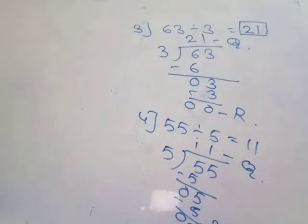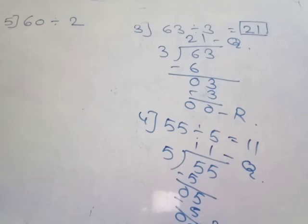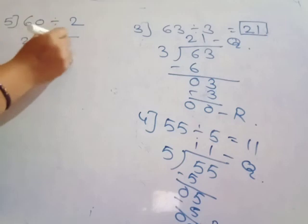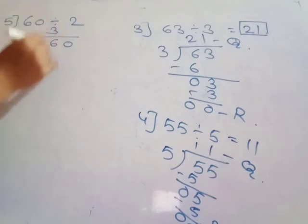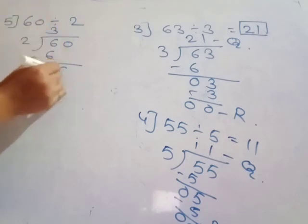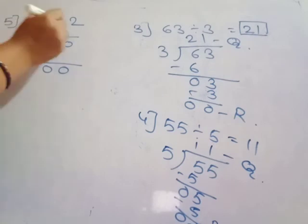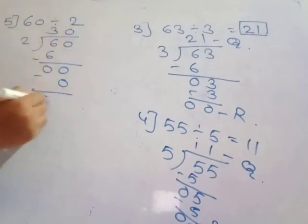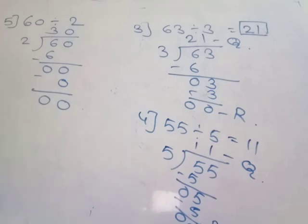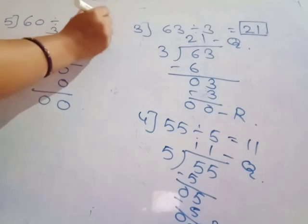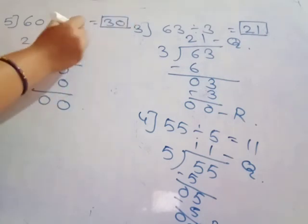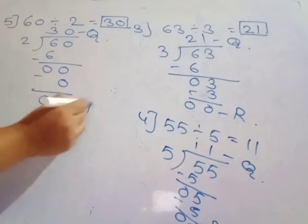Next example: 60 divided by 2. This 2-digit number is divided by 2. Firstly divide the ten's place number 6 by 2: in the two times table, 2 ones are 2, 2 twos are 4, 2 threes are 6. Then take the unit's place number 0. Here you write 0, and 0 into 0 is 0. So 60 divided by 2 is equal to 30 — quotient 30, remainder 0.